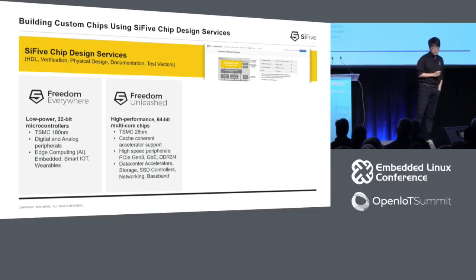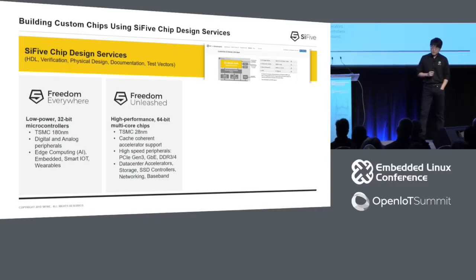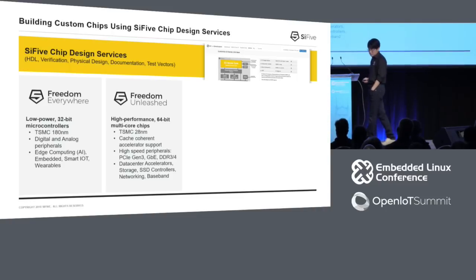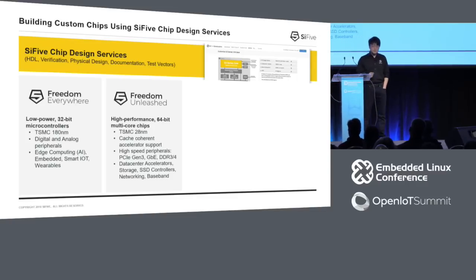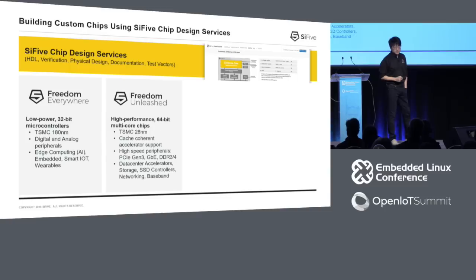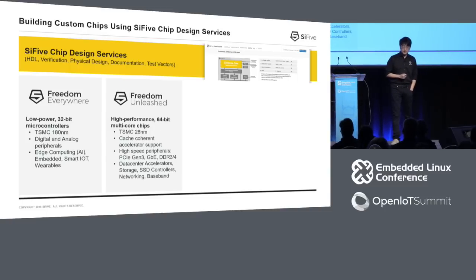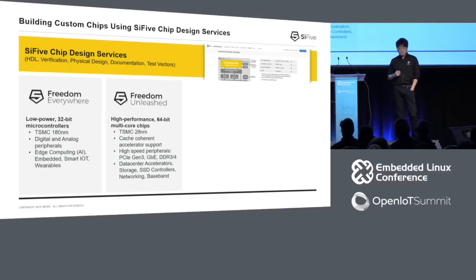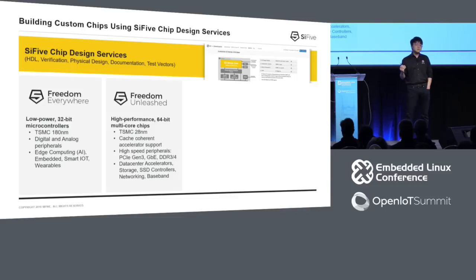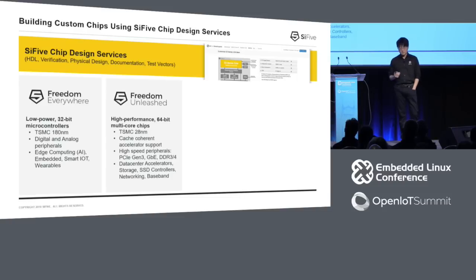Today we have two templates for building your own chip. The first template is called Freedom Everywhere — it's a low-power 32-bit microcontroller manufactured in TSMC 180 nanometer, and it's good for IoT applications. The second template is called Freedom Unleashed — it's a high-performance 64-bit multi-core platform manufactured in TSMC 28 nanometer, supporting coherent accelerators. We have already onboarded all the important peripherals such as PCIe, DDR, and gigabit Ethernet, so you don't need to work on onboarding these important IPs onto the platform — we've already done that work.